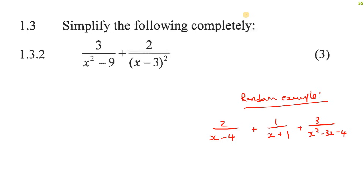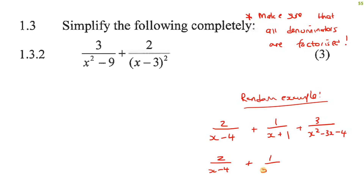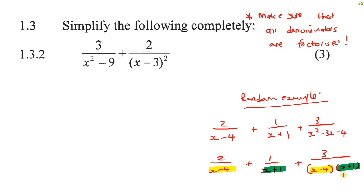The key thing you need to remember is: make sure that all denominators are factorized. Here you can't factorize that, and here you can't factorize that, but this is a trinomial. If you had to figure out the brackets, you should end up with (x minus 4)(x plus 1). Now have a look: x minus 4 matches, and x plus 1 matches.